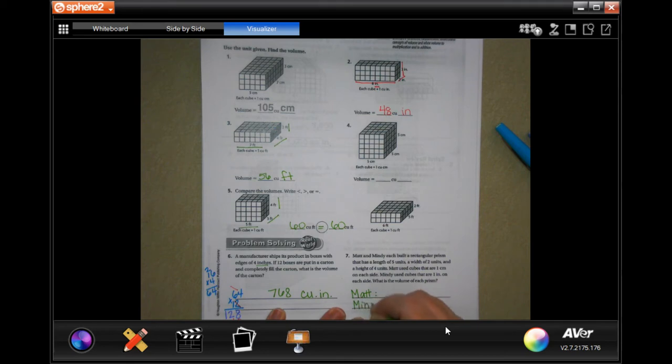So Matt and Mindy—5 times 2 is 10, times 4 is 40. So they're both going to be 40.